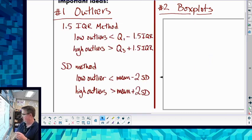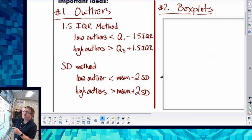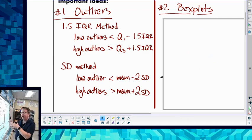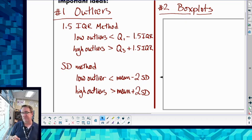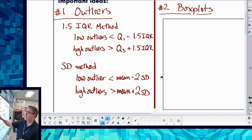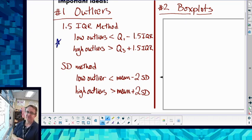The way that we talked about, the 1.5 IQR method, is you're going to go 1.5 IQR lower than your first quartile and 1.5 IQR bigger than your third quartile. This is going to be the way we are going to be doing things in class.